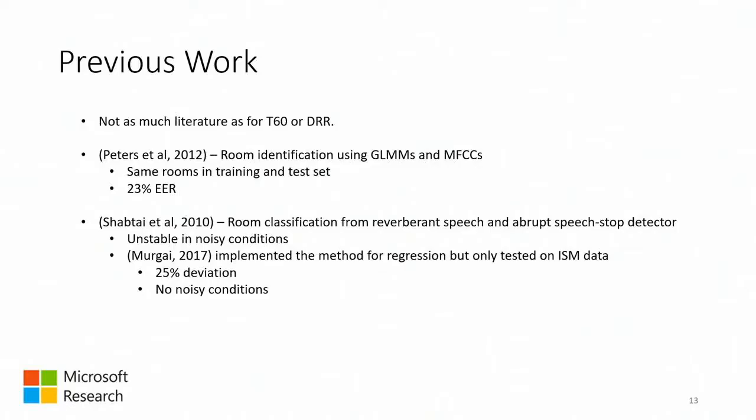Previous work on blind volume estimation — there's not as much literature as for T60 or DRR. It's been treated as a side problem but recently has been brought up again. In 2012, there was a paper about room identification using generalized Gaussian mixture models and MFCCs. The problem is that paper used the same rooms in the training and test set, which as we see later makes a big difference in results. They achieved roughly 23 percent equal error rate, but having the same room in both sets doesn't really tell you much.